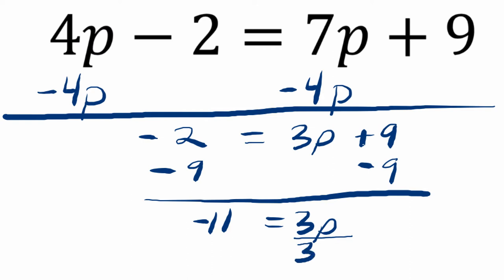if we divide both sides by 3, these 3's cancel, and p equals negative 11 thirds.